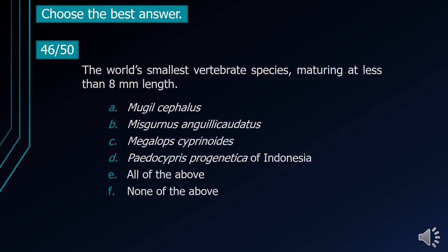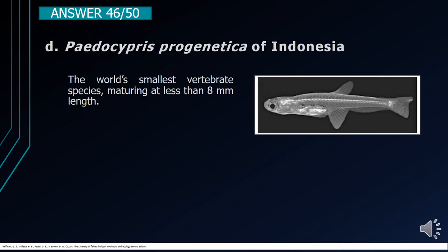Number 46. The world's smallest vertebrate species, maturing at less than 8 mm in length. A. Mugil cephalus. B. Misgurnus anguillicaudatus. C. Megalops cyprinoides. D. Paedocypris progenetica of Indonesia. E. All of the above. F. None of the above. The correct answer is letter D, Paedocypris progenetica of Indonesia. It is the world's smallest vertebrate species, maturing at less than 8 mm in length.